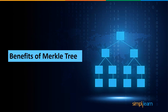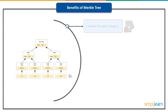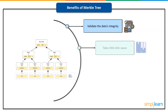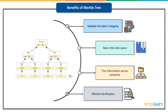Now let's explore the benefits of Merkle tree. Merkle trees provide four significant advantages. First, validate the data's integrity — it can be used to effectively validate the data's integrity. Second, it takes little disk space — the Merkle tree takes up very little disk space compared to other data structures. Third, timely information across networks — Merkle trees can be broken down into small pieces of data for verification. And fourth, efficient verification — the data format is efficient and verifying data integrity takes only a few moments.